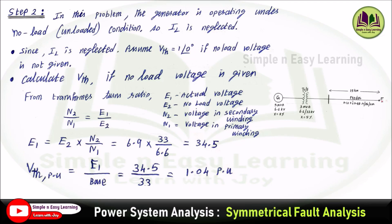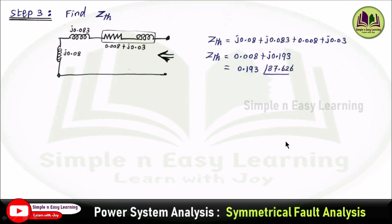Step 3: Find the Thevenin impedance Z_Thevenin. From the reactance diagram, remove all sources. All 3 reactances are in series, so simply add them: Z_Thevenin = 0.08 + j0.083 + (0.0082 + j0.033) = 0.008 + j0.193 per unit, which equals 0.193∠87.626°.